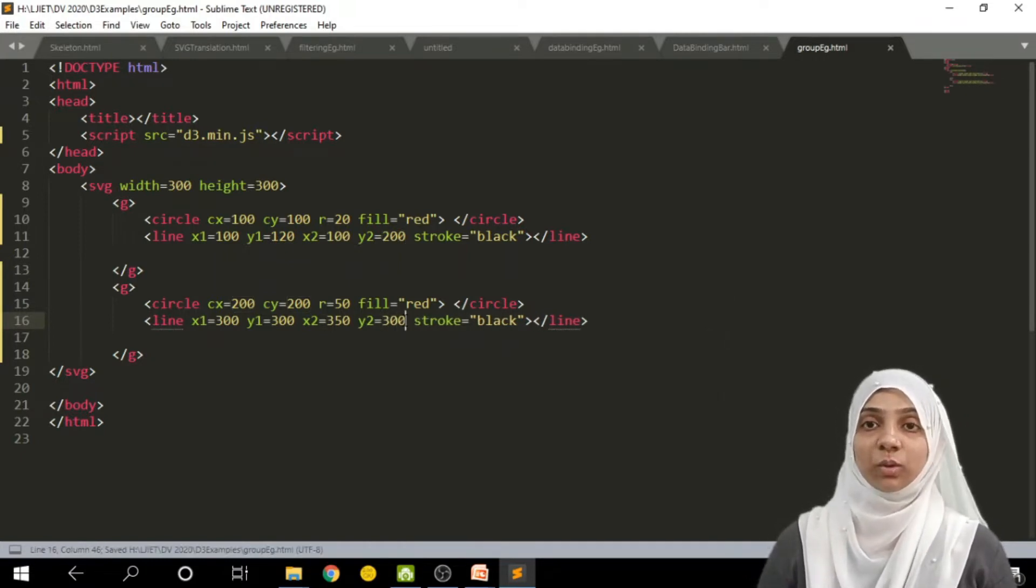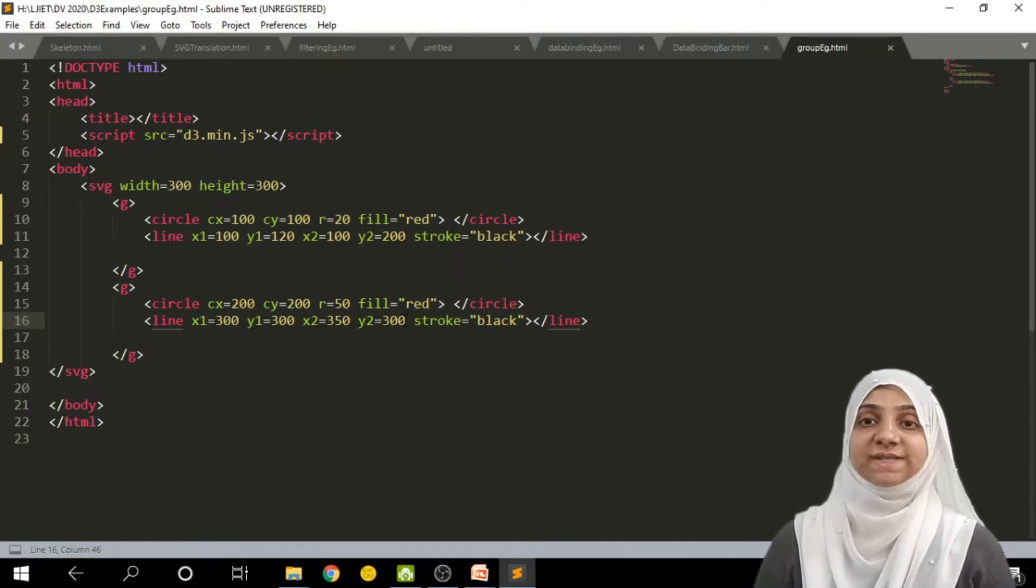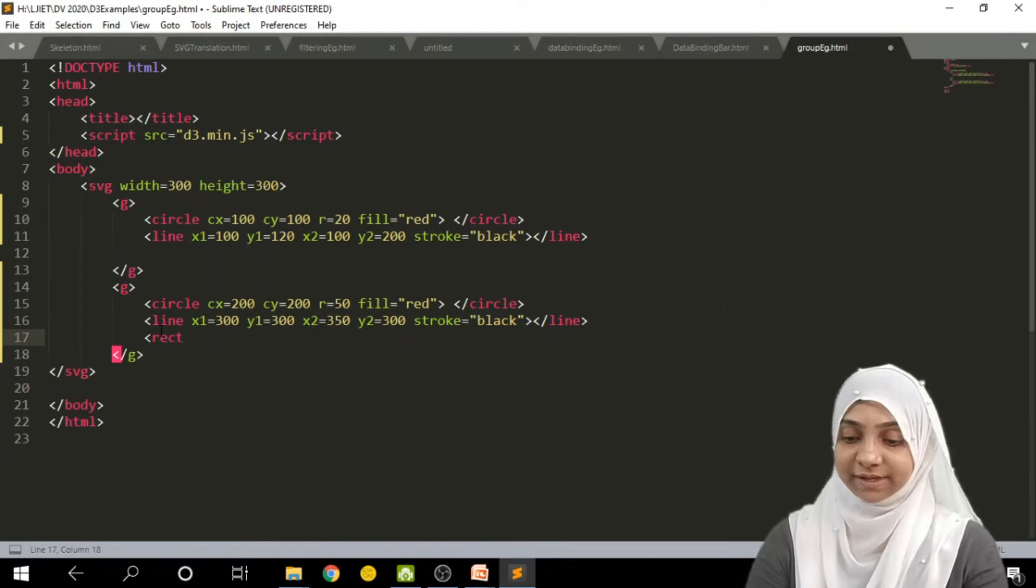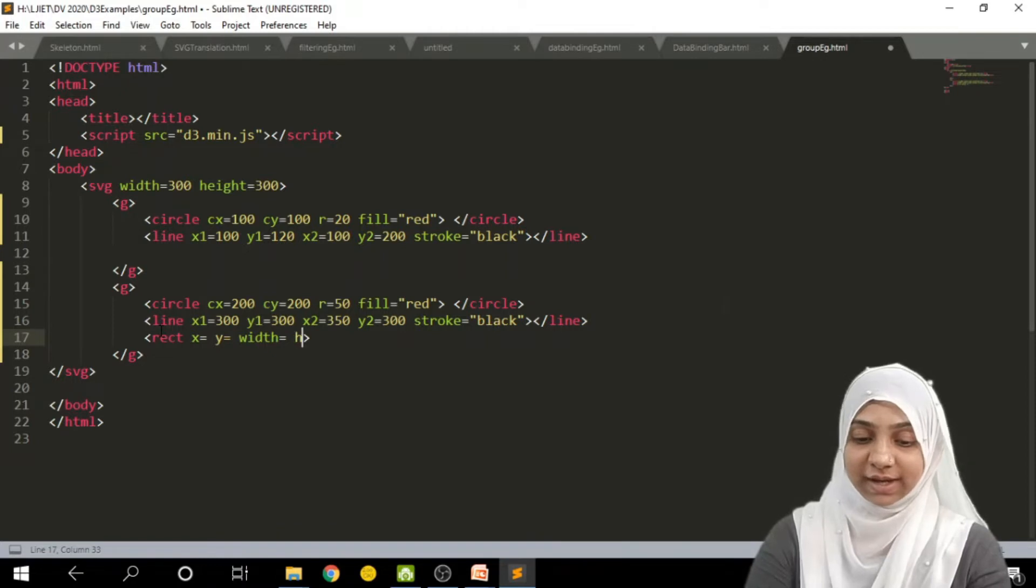So this is how we can group different elements under one tag to make a group using G tag. Let me add one more element, that is rect within this, which is having attributes like x coordinate, y coordinate, as well as width and height.